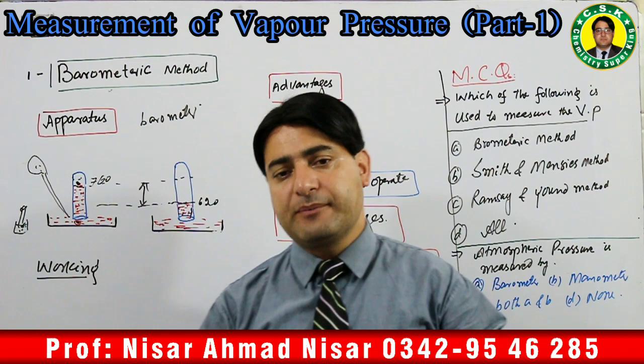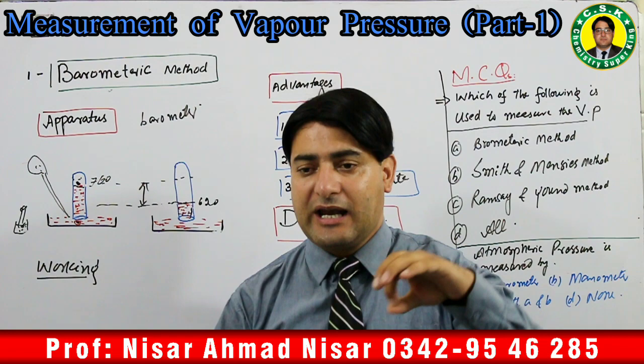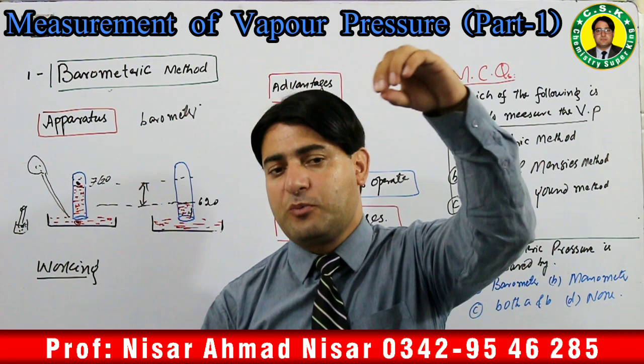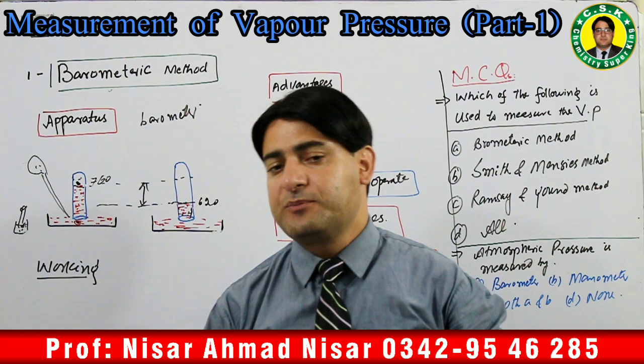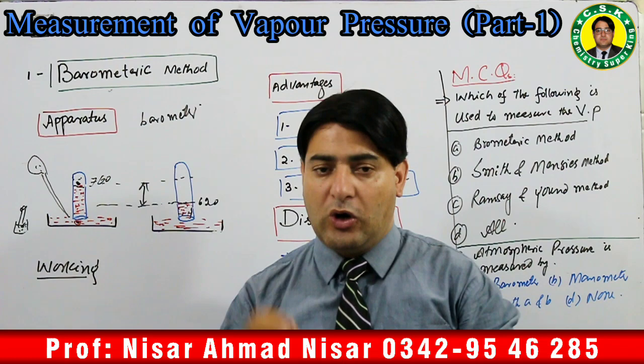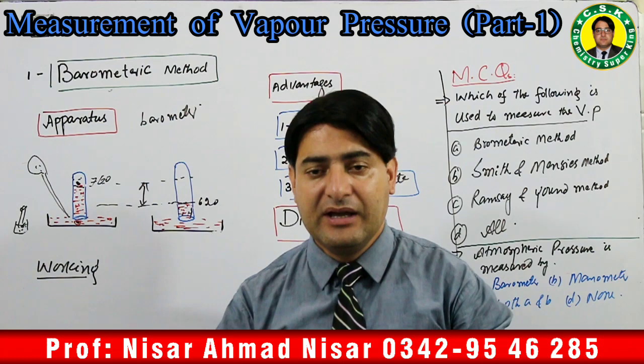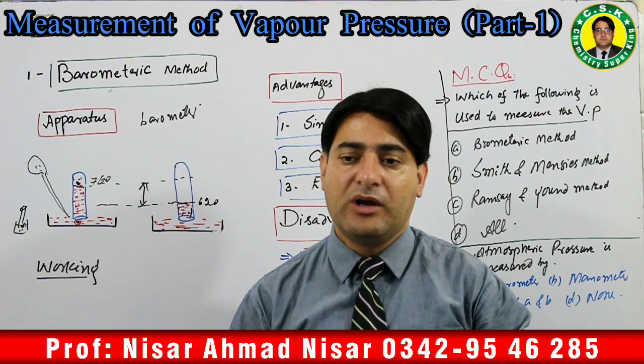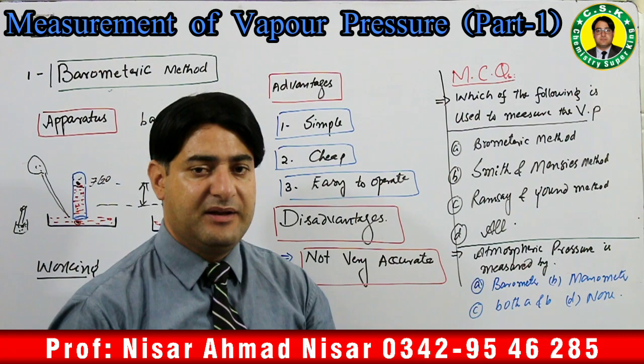Mercury hum kyun use karte hain? Do reasons ki wajah se. Ek: mercury ki density tamam liquids se zyada hai, is liye jis liquid ko bhi daalenge woh mercury ke top par chala jaayega. Doosri reason: mercury inert hai — woh kisi liquid se reaction nahi karegi aur wall of container ko bhi wet nahi karegi. Is liye hum mercury use karte hain barometer mein.